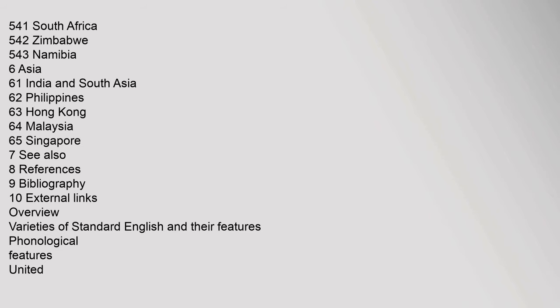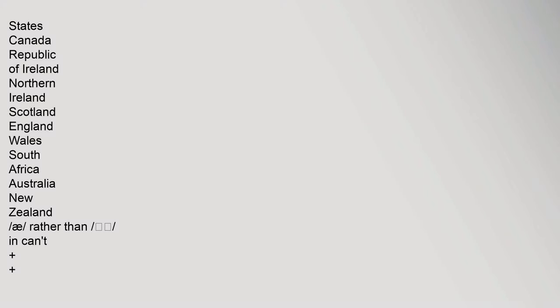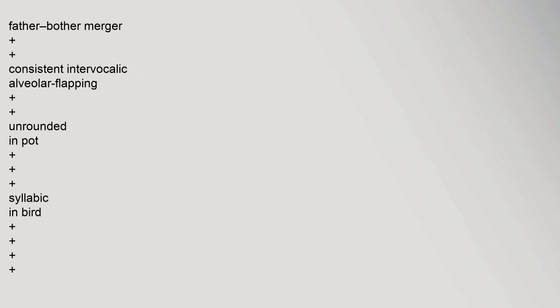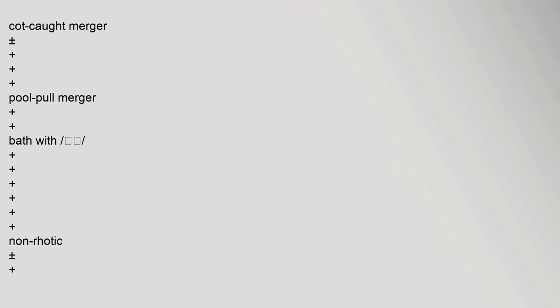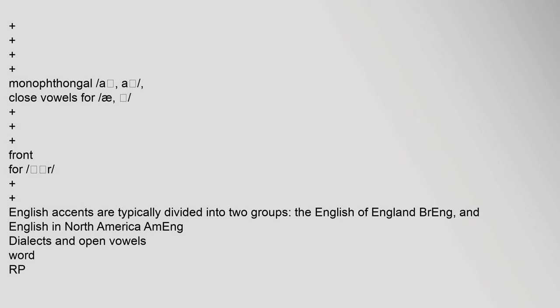An overview of varieties of standard English and their phonological features compares dialects across the United States, Canada, Republic of Ireland, Northern Ireland, Scotland, England, Wales, South Africa, Australia, and New Zealand. Features examined include the father-bother merger, intervocalic alveolar flapping, the caught-cot merger, the pool-pull merger, non-rhoticity, and monophthongal vowels. English accents are typically divided into two groups: British English and North American English dialects.